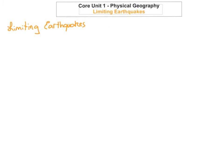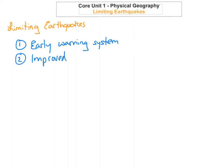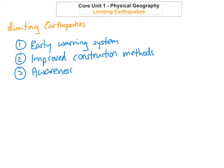We're going to look at three main areas of limiting the damage. The first is early warning signs — having early warning systems in place can limit the damage caused from earthquakes. The second area is improved construction methods. The third is building awareness: educating people about what to do when an earthquake takes place and how to prepare.